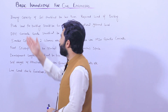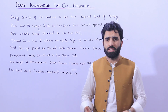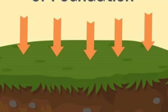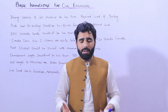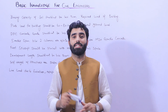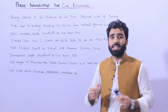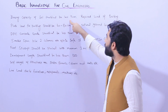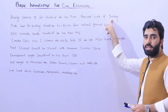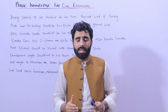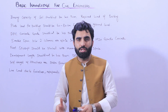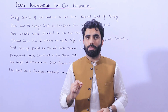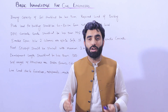The first topic is bearing capacity. What is bearing capacity? The bearing capacity is the strength of soil. We have different types of soil and different types of soil have different bearing capacity. The bearing capacity is the resistance which the soil can provide to the structure. The bearing capacity of the soil should not be less than the required load of the building — for example, 5000 kg per square meter or 10,000 kg per square meter.